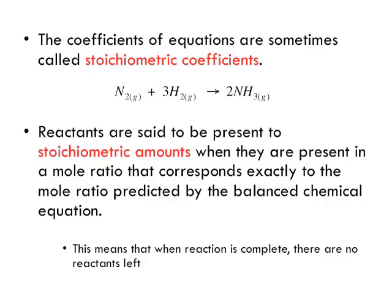The limiting reactants. The coefficients of equations are sometimes called stoichiometric coefficients. These numbers in front of each compound — back when we first learned about chemical reactions we knew it meant we had two of these, one of these, maybe five of those. We realized there is a relationship we can use in terms of a mole ratio — how many moles of this to how many moles of that to produce a certain number of moles of a product.